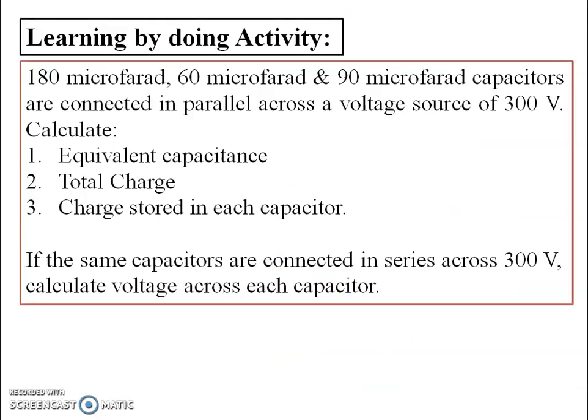Let's sum up this lecture with an activity. Note this numerical in your notebook and solve it using series and parallel concepts. Three capacitors — 180 microfarad, 60 microfarad, and 90 microfarad — are connected in parallel across 300 volts. Calculate equivalent capacitance, total charge, and charge stored in each capacitor. Further, if the same capacitors are connected in series across 300 volts, calculate the voltage across each capacitor. Take reference from the previously solved examples.